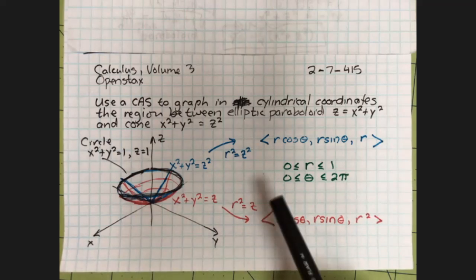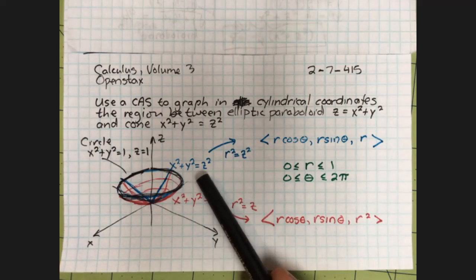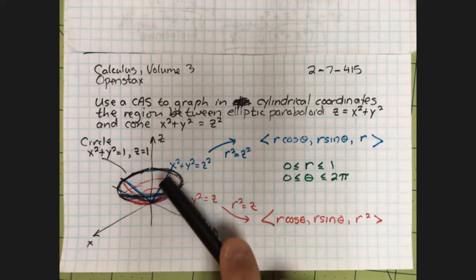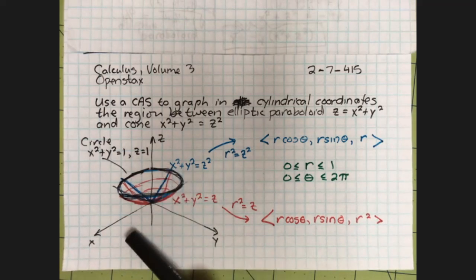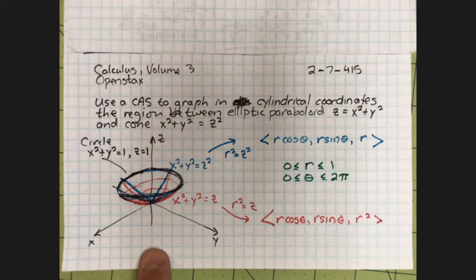The cone, x squared plus y squared equals z squared. If x or y is 0, then you get z is plus or minus x, plus or minus y. You get straight line sides. z equals plus minus x equals plus minus y in the planes.